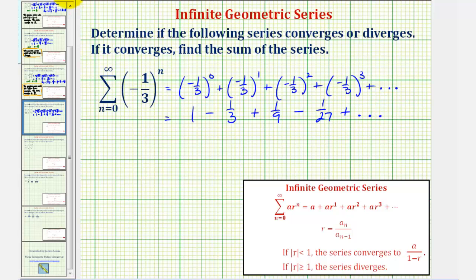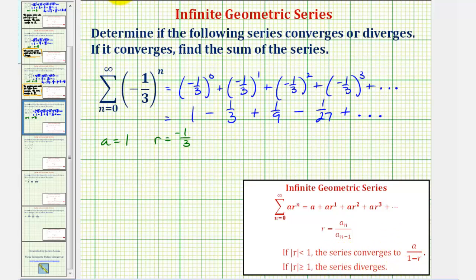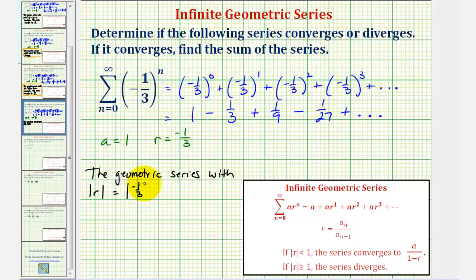Looking at the terms in our series, the first term, a, is equal to one. And as we already mentioned, r, the common ratio, is equal to negative one-third. Since the absolute value of negative one-third is one-third, which is less than one, the series will converge. The geometric series with the absolute value of r — in this case, the absolute value of negative one-third, which equals one-third — is less than one, so it converges.